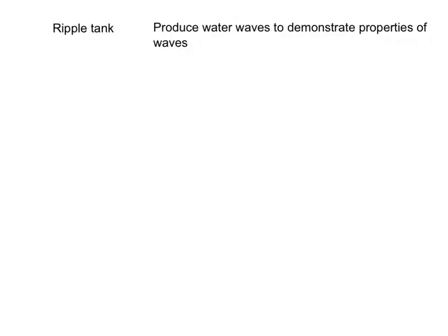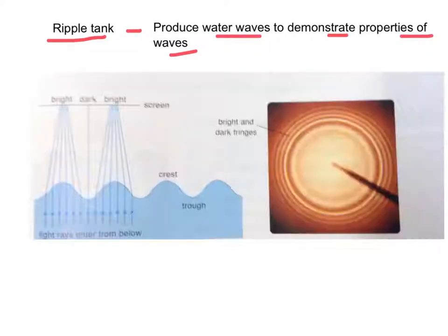The ripple tank is an instrument that produces water waves to demonstrate different properties of waves. When a water wave is formed and parallel light waves pass through the water wave from below, positions of crest light waves converge on the screen.